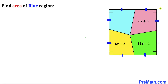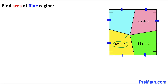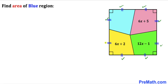Welcome to PreMath. In this video we have a square that has been divided into four different regions. The pink region area is represented by 6x plus 5, the green region by 12x minus 1, and the yellow region by 6x plus 2. Our task is to calculate the area of the blue shaded region. These side lengths are equal in length.